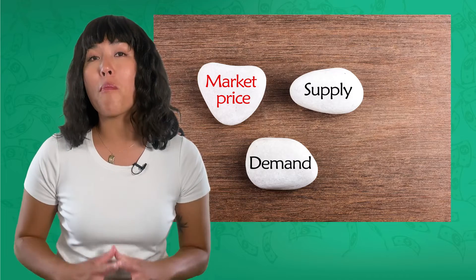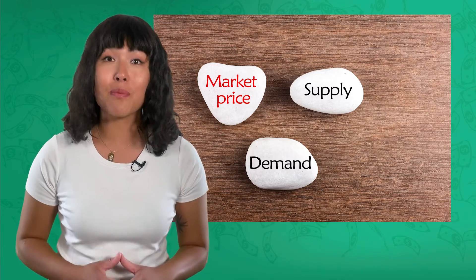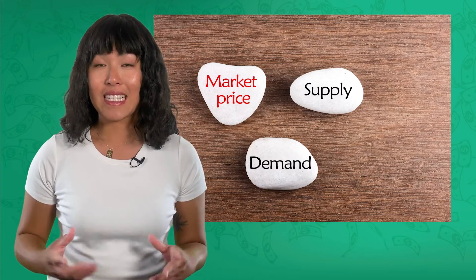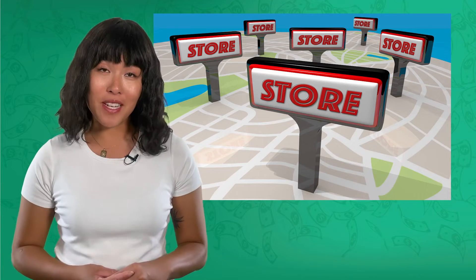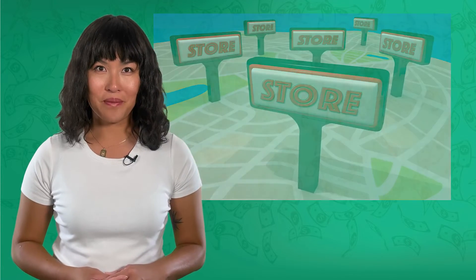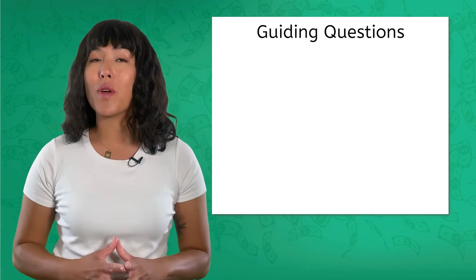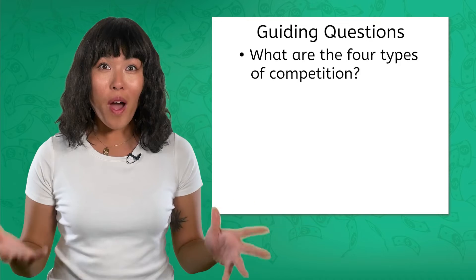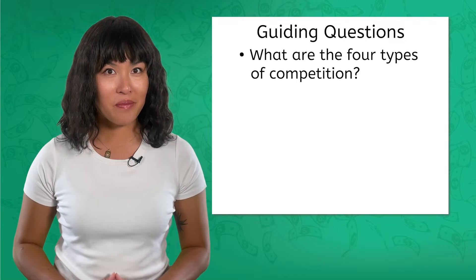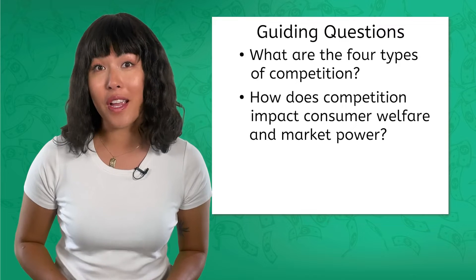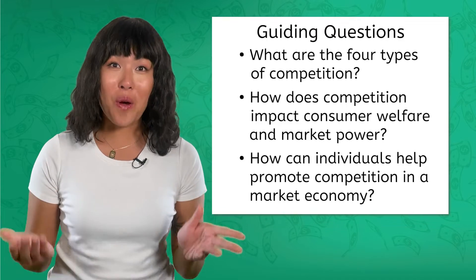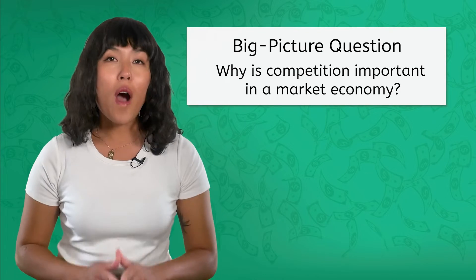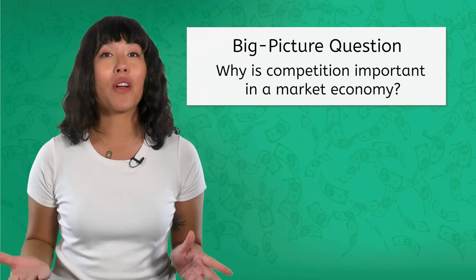In previous lessons, we've talked about how market forces like price, demand, and supply interact in the market. Today, we're going to look at how market structure and the number of firms impact competition, another important market force. By the end of today's lesson, you should be able to answer the following questions: What are the four types of competition? How does competition impact consumer welfare and market power? How can individuals help promote competition in a market economy? And you should start thinking about our big picture question: Why is competition important in a market economy?